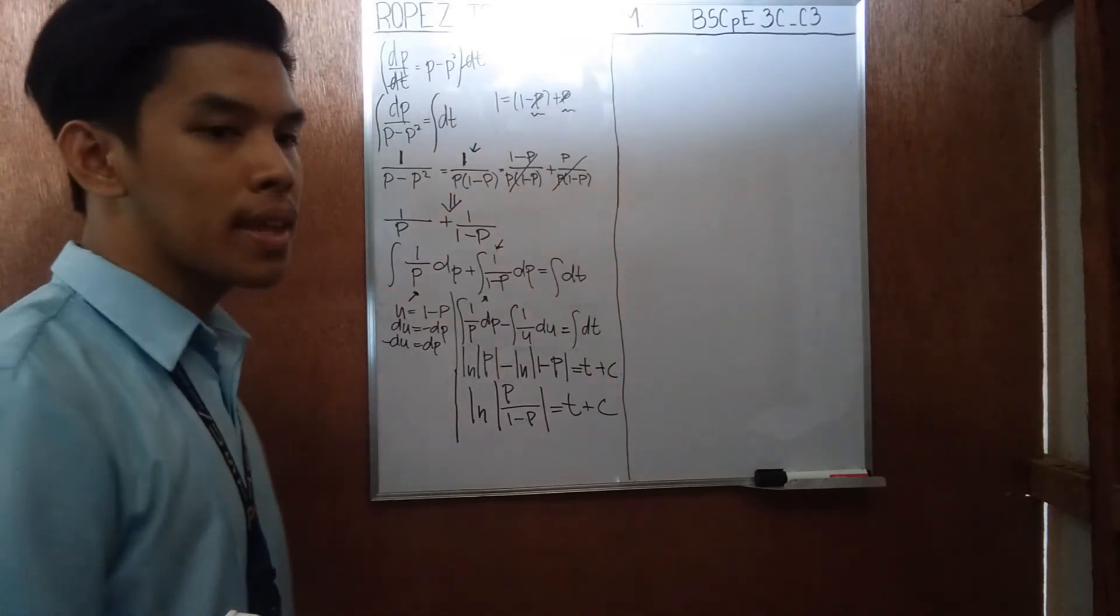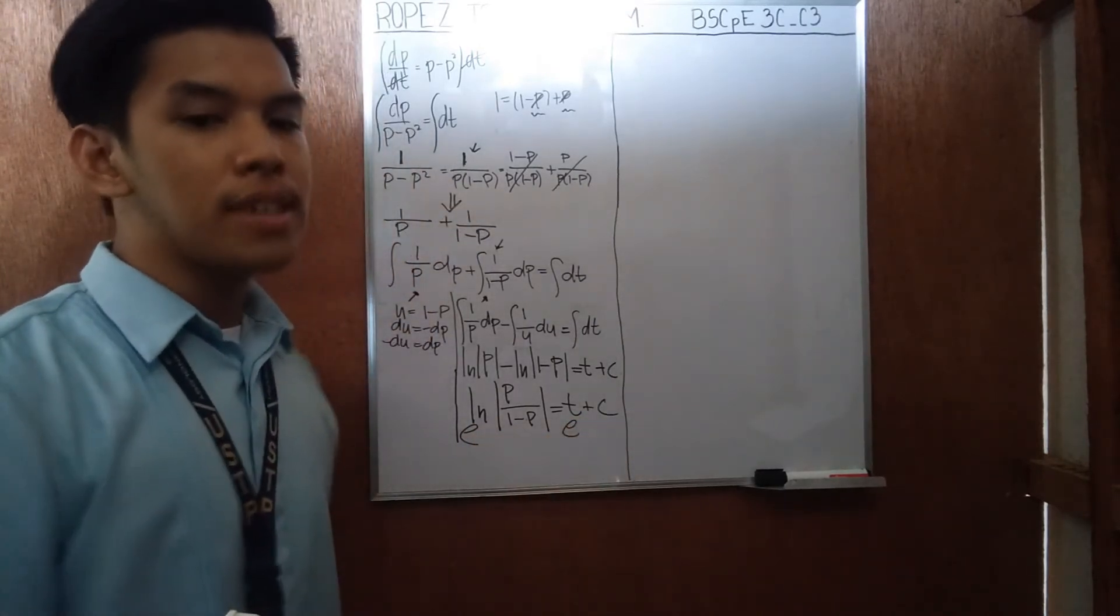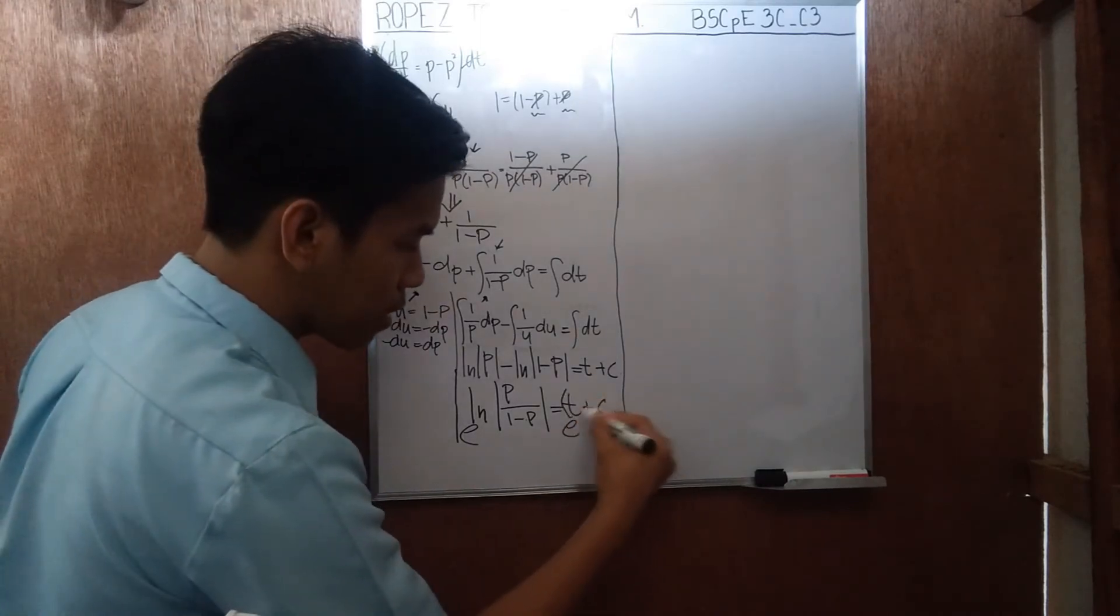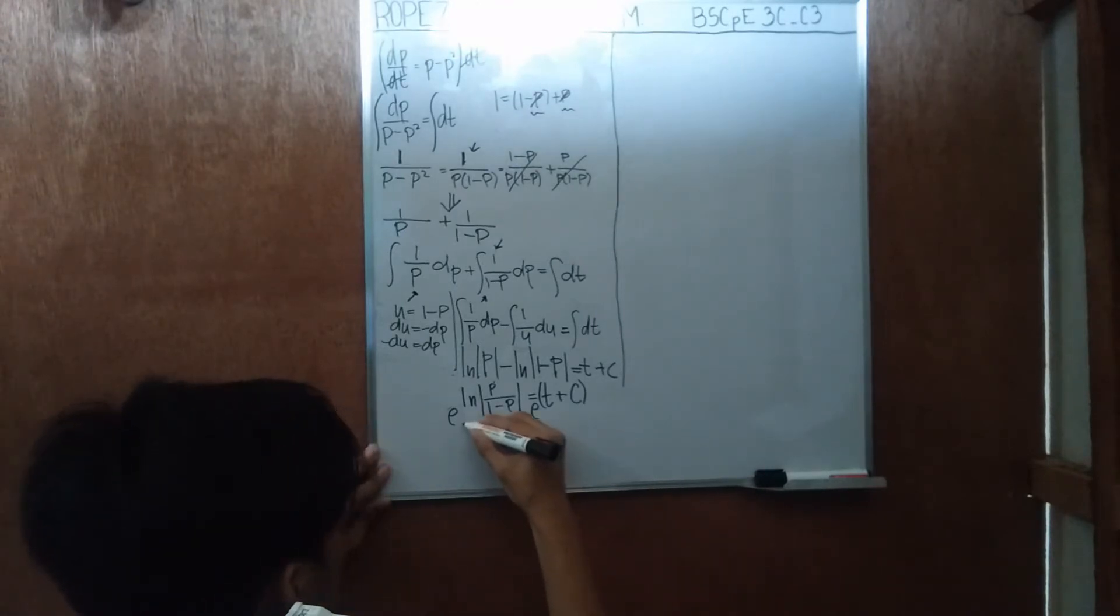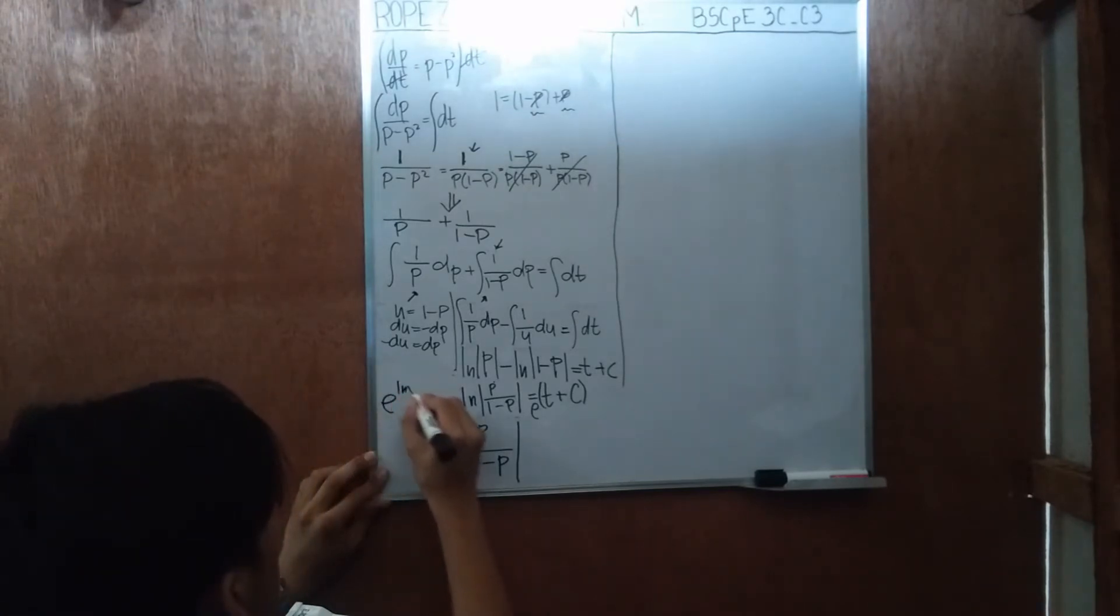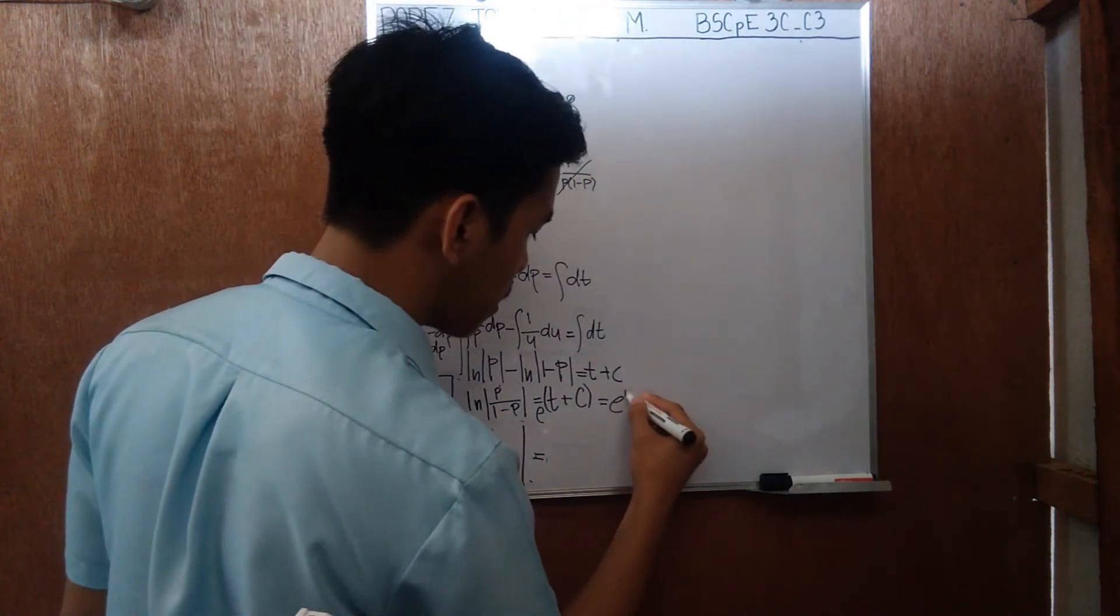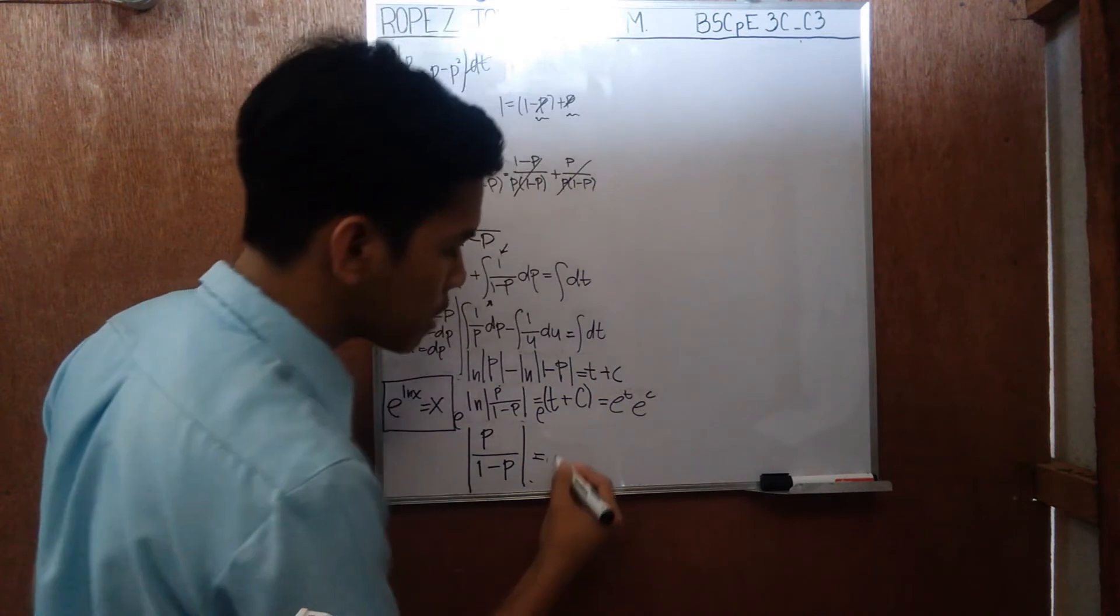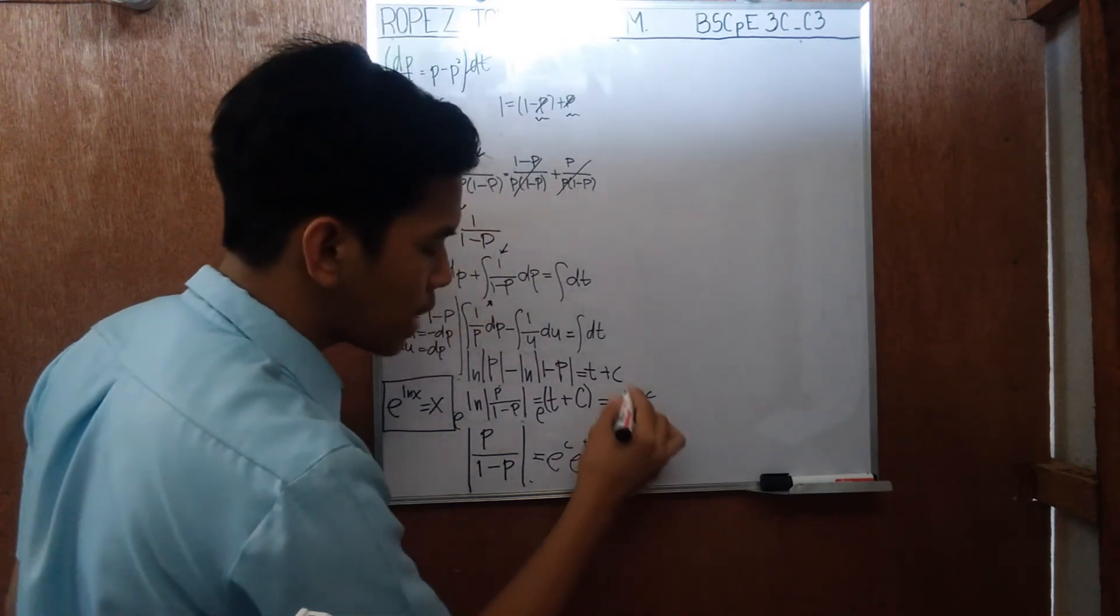To get rid of the natural log, we can exponentiate both sides. E, e. And all of these are exponents. And this. So on the left hand side, we'll end up with the absolute value of p over 1 minus p because e ln x is equals to x. So we're going to end up, well, this is equals to e to the t, e to the c. So I'm just going to write here as e to the c, e to the t. We're just adding an exponent.